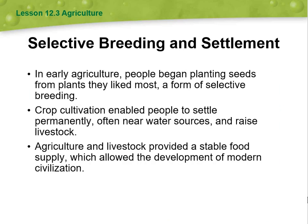Moving to selective breeding and settlement: in early agriculture, people began planting seeds from plants they liked most, which is a form of selective breeding. Crop cultivation enabled people to settle permanently, often near water sources, and raise livestock. Agriculture and livestock provided a stable food supply, which allowed the development of modern civilization.